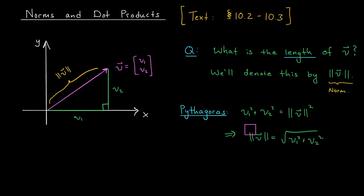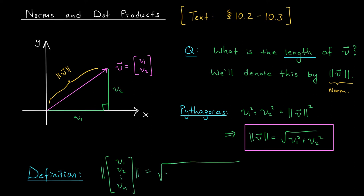It turns out that the same sort of formula will emerge for vectors in R3. We would just add the third component squared here as well. So this is going to be our general definition of length for vectors in Rn. If the components are V1, V2, up to Vn, we're going to define the norm of V to be the square root of V1 squared plus V2 squared, all the way up to Vn squared.